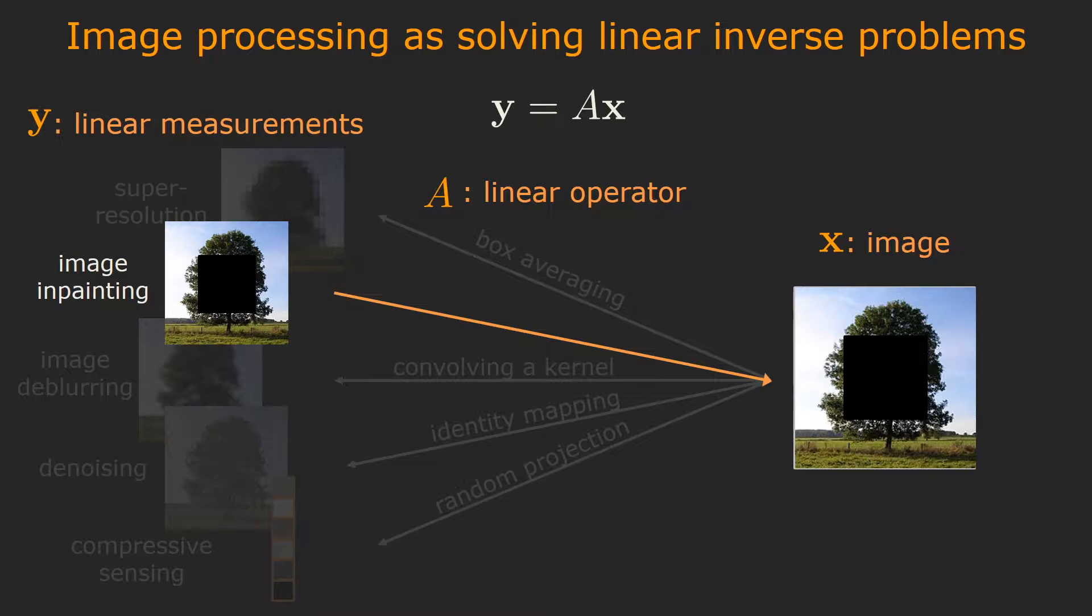Let's consider one example: image inpainting. Observe that we can fill in any signal in the blank regions and form a feasible solution, even if they are not valid natural images.